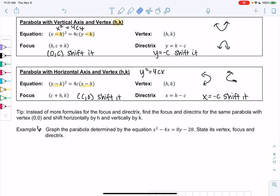So instead of more formulas for the focus and directrix, I think we're getting overwhelmed with how many formulas we have. I like to find the focus and directrix for the same parabola with vertex of (0,0), and then just shift horizontally by h and vertically by k.